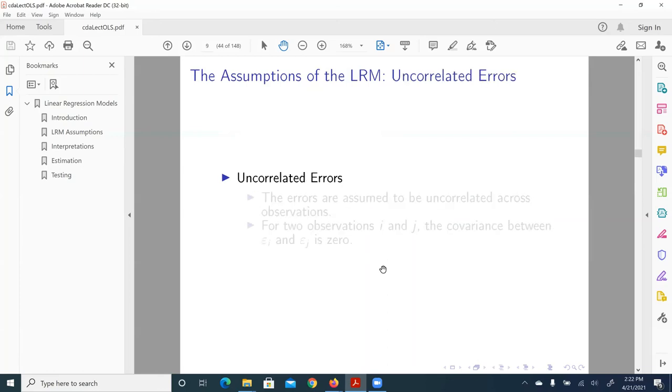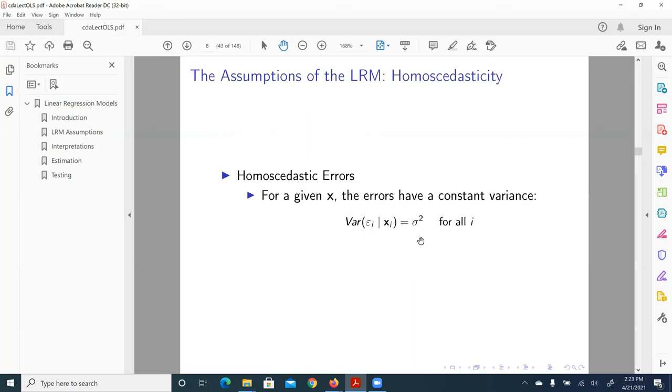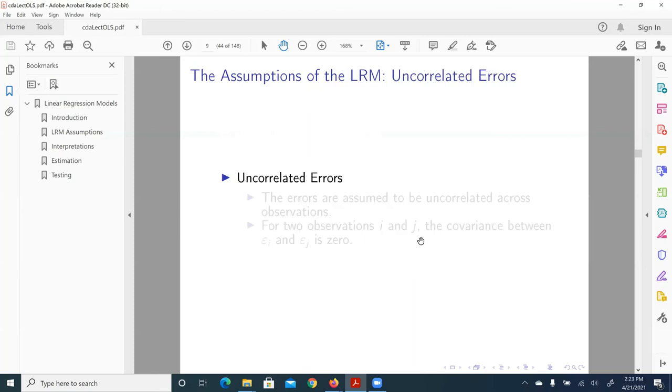Next assumption is uncorrelated errors. So we just talked about homosedasticity, assumption of the errors. That is the variance of the error terms are constant. Then the errors across cases, different cases, they're not supposed to be correlated. And this assumption is peculiar to the classic ordinary least square. That is for two observations, any two observations, i and j, the covariance between epsilon i and epsilon j is zero. That is, there's no correlation among these two error terms.